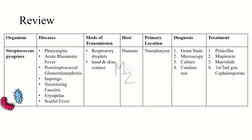Let's review everything quickly. The organism is Streptococcus pyogenes, responsible for causing pharyngitis — which if left untreated leads to acute rheumatic fever — post-streptococcal glomerulonephritis, impetigo, necrotizing fasciitis, erysipelas, and scarlet fever. It is transmitted via respiratory droplets or hand and skin contact. Humans are the only host; the primary location is the nasopharynx. Diagnosed with Gram stain, microscopy, culture, and catalase test. Treated with penicillin, mupirocin, macrolides, and first- and second-generation cephalosporins.